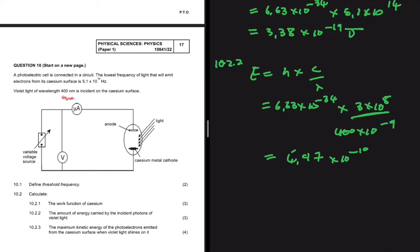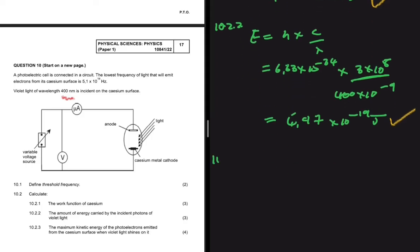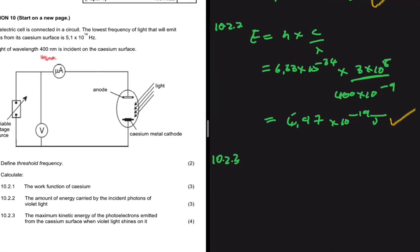So this is the amount of energy from the light that is incident on our surface, and this is the amount of energy that is required. You can see that the amount of energy incident is greater than the amount of energy required. So when those electrons are ejected from the surface, they're going to have some kinetic energy. Now 10.2.3 asks for the maximum kinetic energy of the photoelectrons emitted from the cesium surface when violet light shines on it.